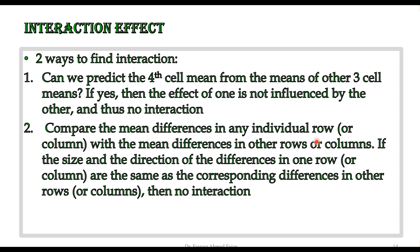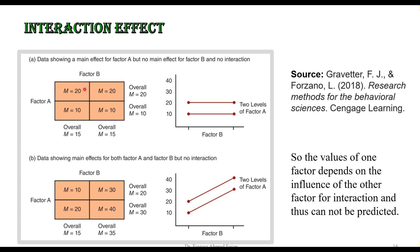The second way to find interaction is to compare the mean difference in any individual row or column with the mean difference in other rows or columns. If the size and direction of the difference in one row or column are the same as another, there is no interaction. We find the difference in means of the rows and columns — if the values are the same, no interaction; if different, there is interaction.